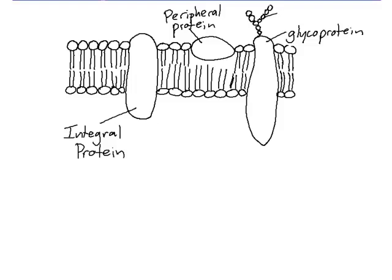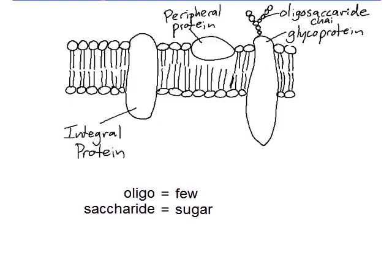This protein is a glycoprotein. It's called a glycoprotein because it has a sugar chain on the end called an oligosaccharide. Oligo means few, saccharide means sugar.